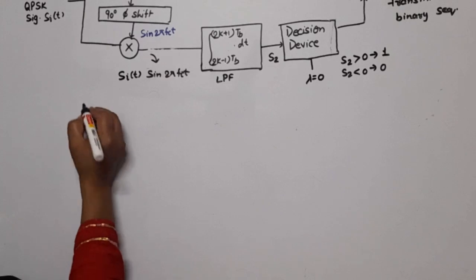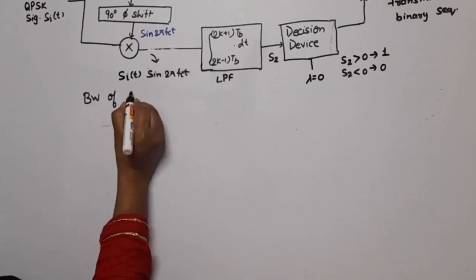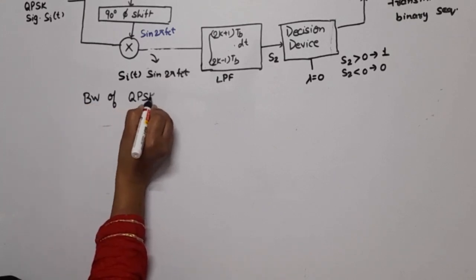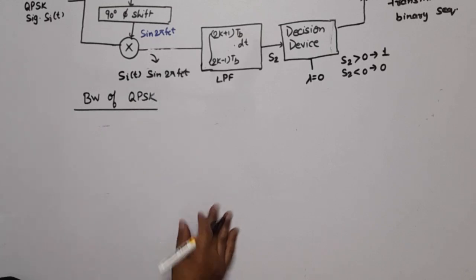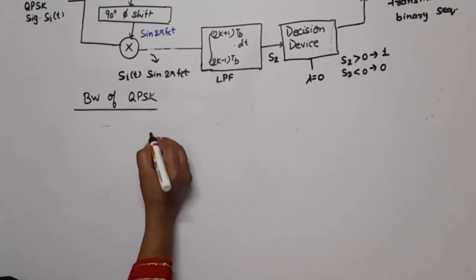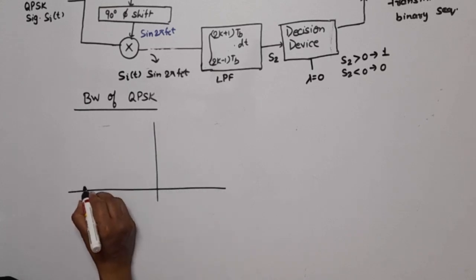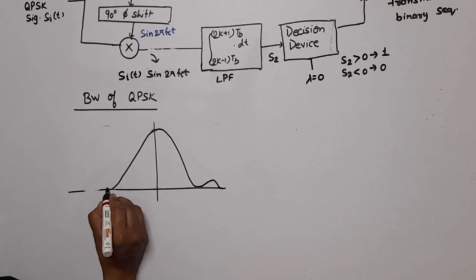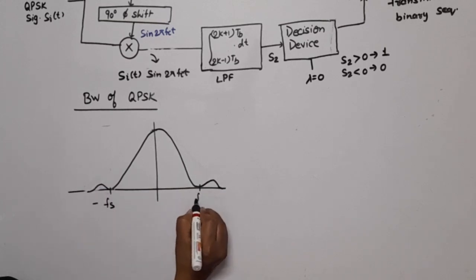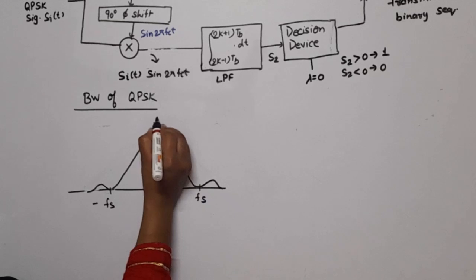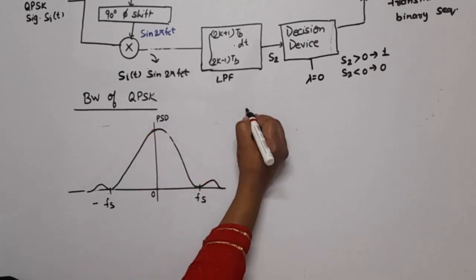Bandwidth of QPSK: we know QPSK is the improved version of BPSK and we use PSK in both channels, so its spectrum is the same as BPSK. The frequency ranges from minus fs to fs with fs at zero, and this is the PSD.